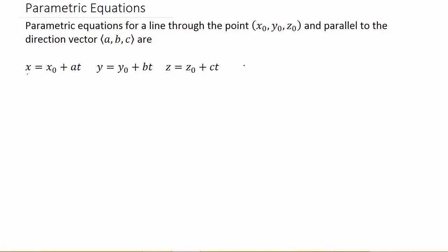All right, so here's the fifth video finding parametric equations for a line through a point x naught, y naught, z naught and parallel to the direction vector a, b, c, and here they are.